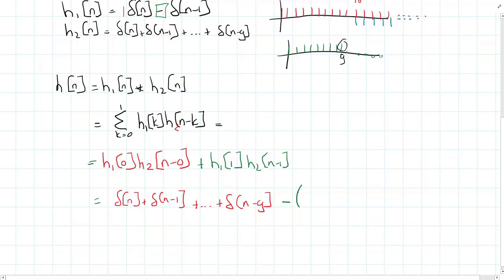simply shifted one in time. So this time we'll start off with delta n minus one, all the way up to delta n minus nine. And since we have shifted it in time, we will also add delta n minus ten.